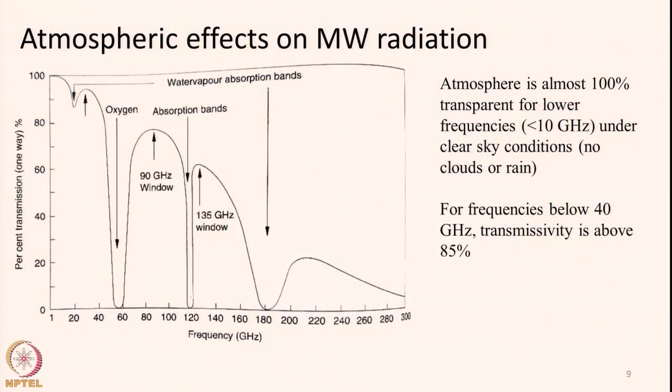Today we will look into the concept of the effect of atmosphere in microwave radiation. We have discussed in detail the effect of atmosphere in optical and thermal infrared wavelengths. Basically, three ways atmosphere will interfere with the radiation going out from the earth surface. First is through atmospheric transmissivity — if transmissivity is 0.8 and 100 units of energy radiate from the earth surface, only 80 units reach the sensor; the remaining 20% is absorbed or scattered.